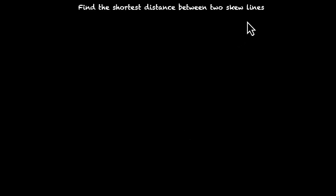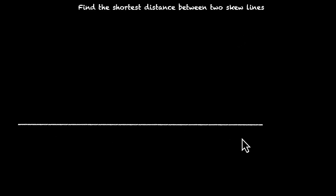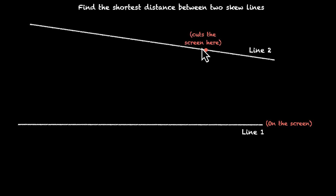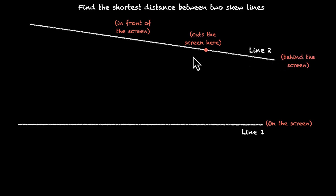Now let's practice visualizing skew lines. Imagine a line on this screen — this is line 1, lying on the screen. This is a 2D screen, and this plane has this line. Now imagine a different line that's not on the screen. This is line 2. This line actually cuts the screen at this point — this part is in front of the screen and this part is behind the screen, so this line is coming into the screen, cuts at this point, and then moves behind the screen.